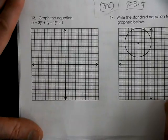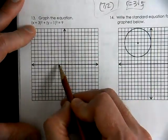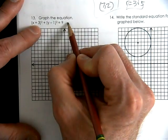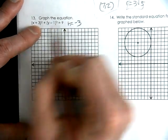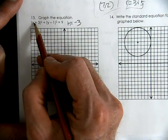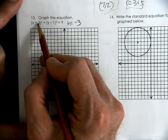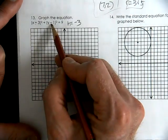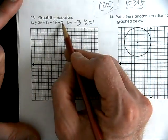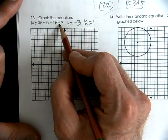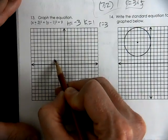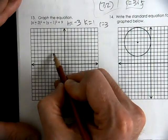Graph the circle equation. The h value is −3 (always take the opposite sign), giving x − (−3) which looks like x + 3. The k value is positive 1. r² = 9, so r = 3. We start at center (−3, 1) and draw a circle with radius 3.